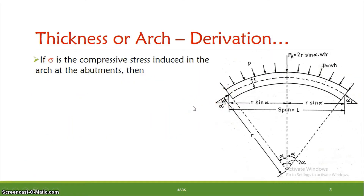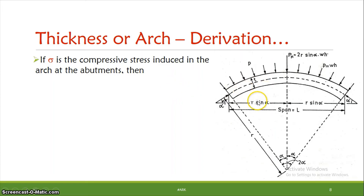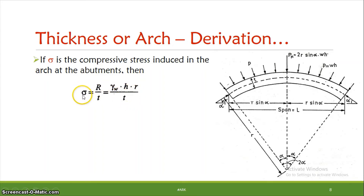Next, we go to compressive stress. The compressive force R divided by the cross-sectional area gives the compressive stress σ. The cross-section is T × 1 (thickness × unit height). So σ = R / (T × 1) = γ_w × H × r / T. This is the compressive stress induced in the dam near the abutments.